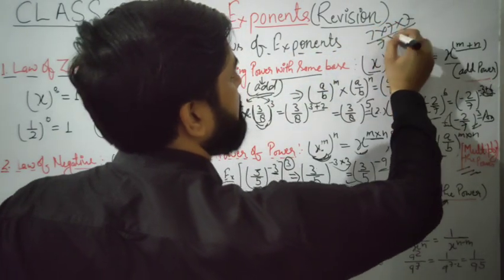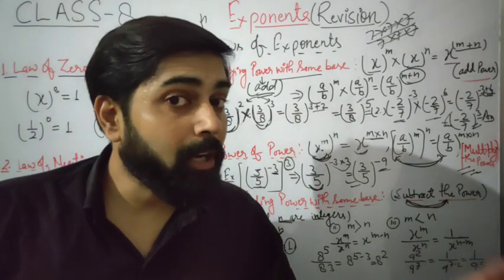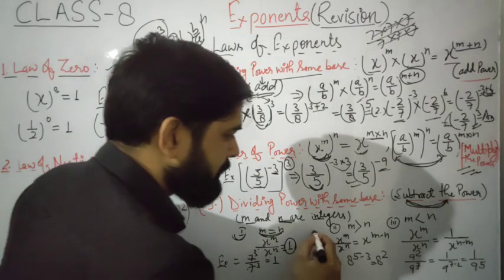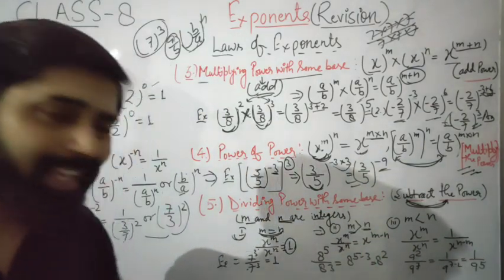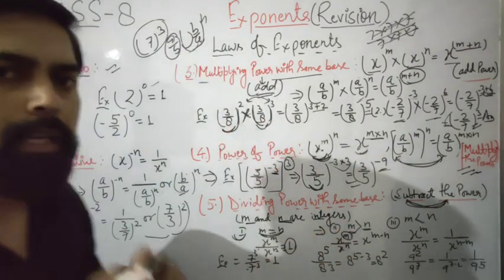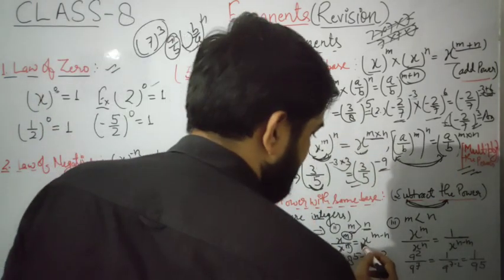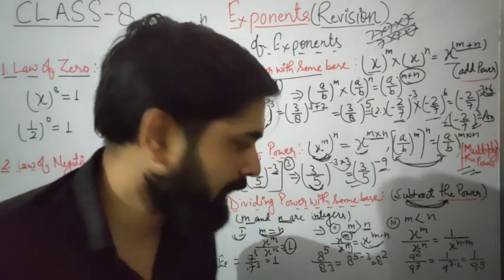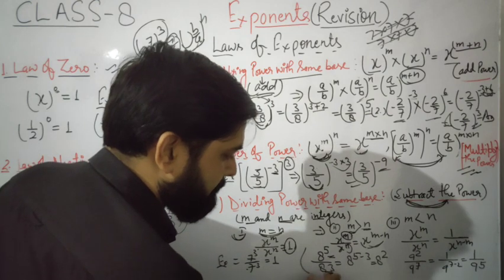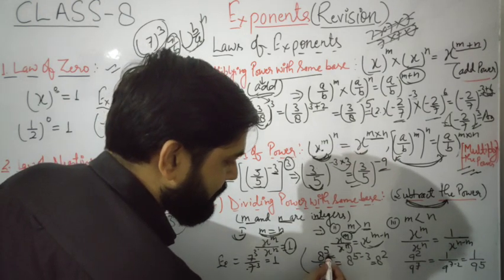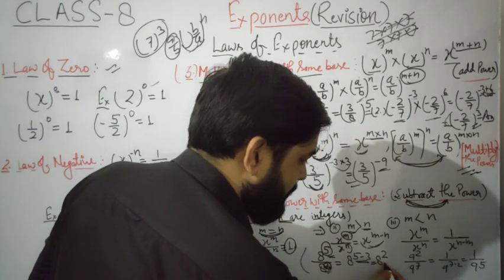For example, seven upon three raised to the power 7, divided by seven upon three raised to the power 7 — all sevens cancel each other top and bottom, so the answer is one. Second condition: when m is greater than n. In this case, subtract the powers: x to the power m divided by x to the power n equals x to the power m minus n.